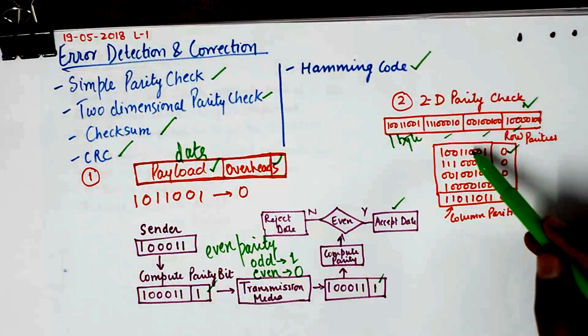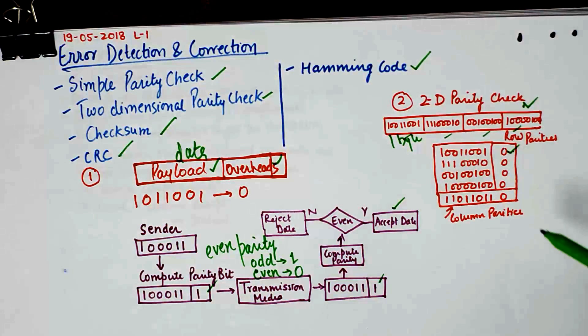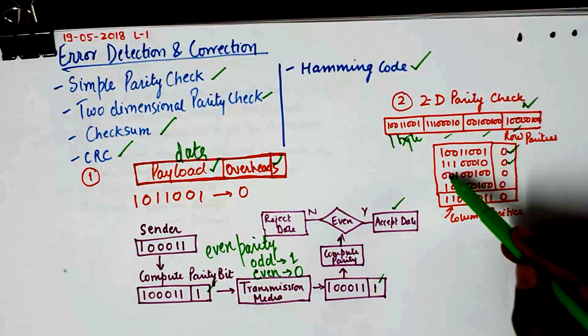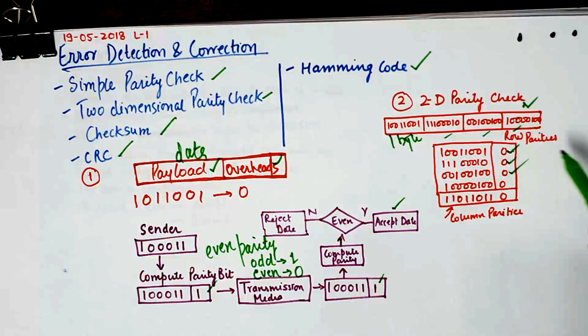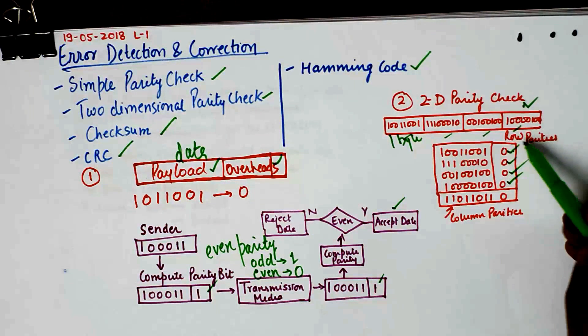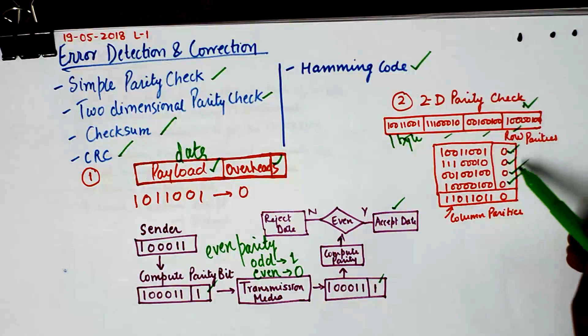So what it does is it is a 2D parity check. It notes down the parity for the rows like this. For example, we have even number of ones so we put a zero here. We have even number of ones here so we put a zero here. We have two ones here so a zero here.